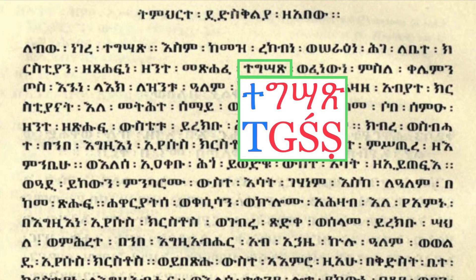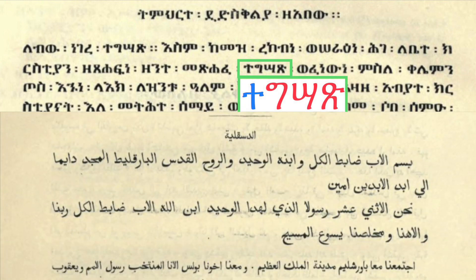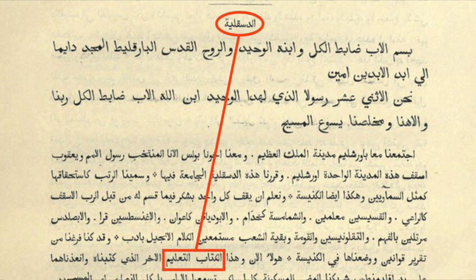And similarly, in the Arabic translation of the Didaskalia, the work refers to itself as Al-Kitab At-Ta'leem — the book of teaching, the book of instruction. And that second word is yet another example of a verbal noun of this sort of structure which we've been examining.